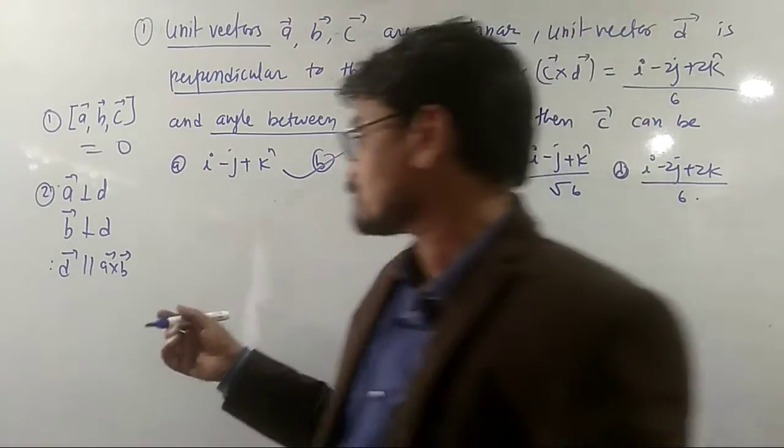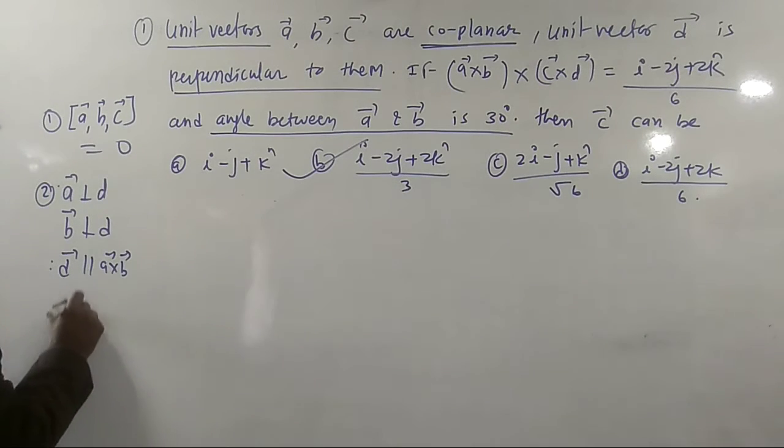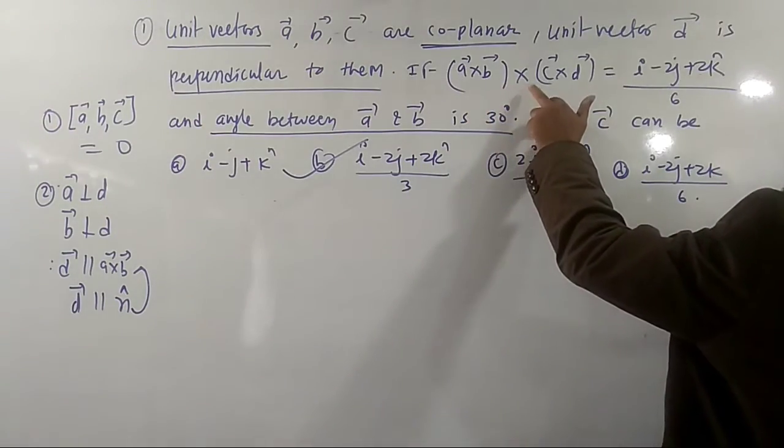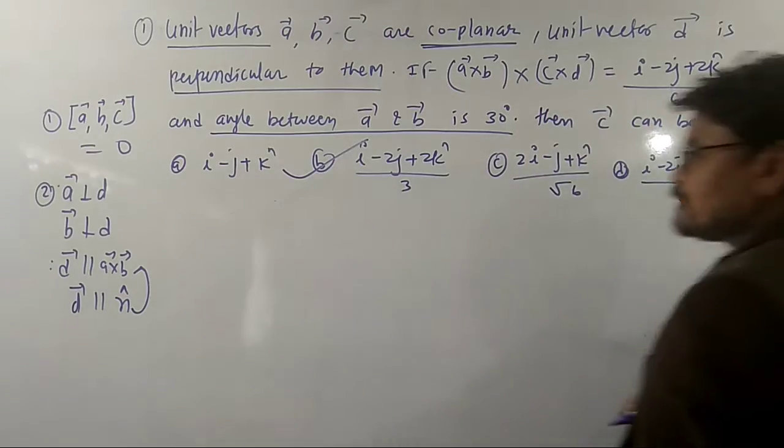And D is parallel to A cross B. That means D is parallel to the unit vector along A cross B. That is the second point. And it is assumed that A cross B cross C cross D equals this much.